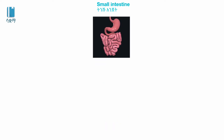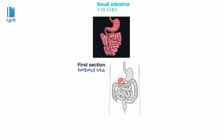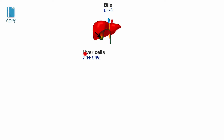The small intestine is divided into sections. The first section of the small intestine processes digested material. The first part involves digestive enzymes.